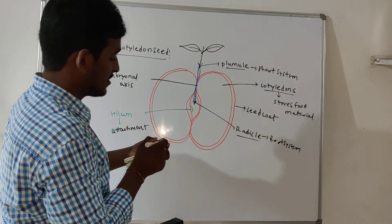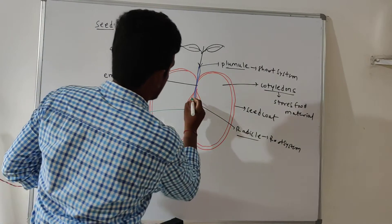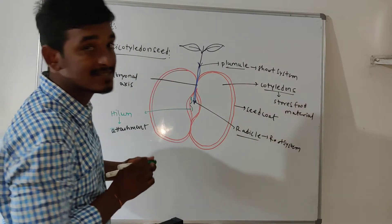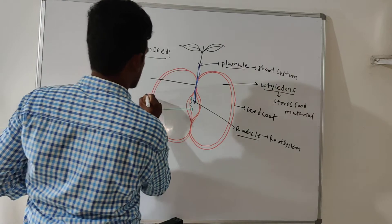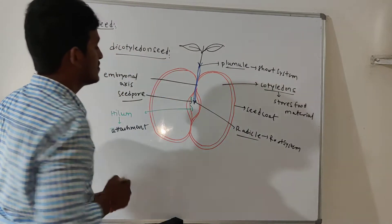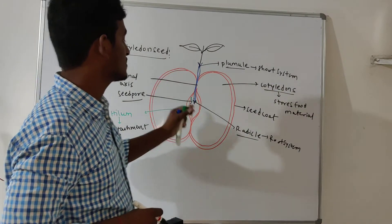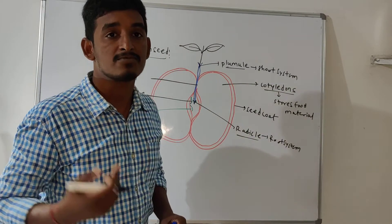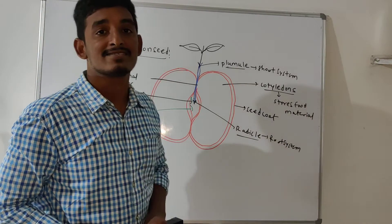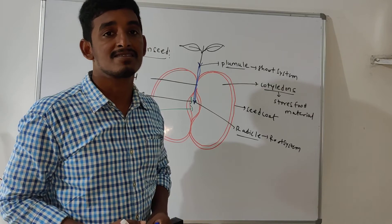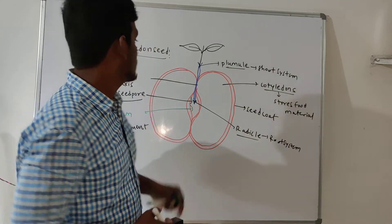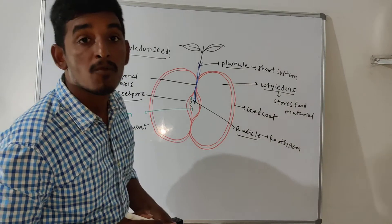Along with this, the seed also has a seed pore. The function of the seed pore is exchange of gases and absorption of water. That is about the dicotyledon seed structure. Examples of dicotyledon plants include mustard and pea. Next we will discuss the monocotyledon seed.